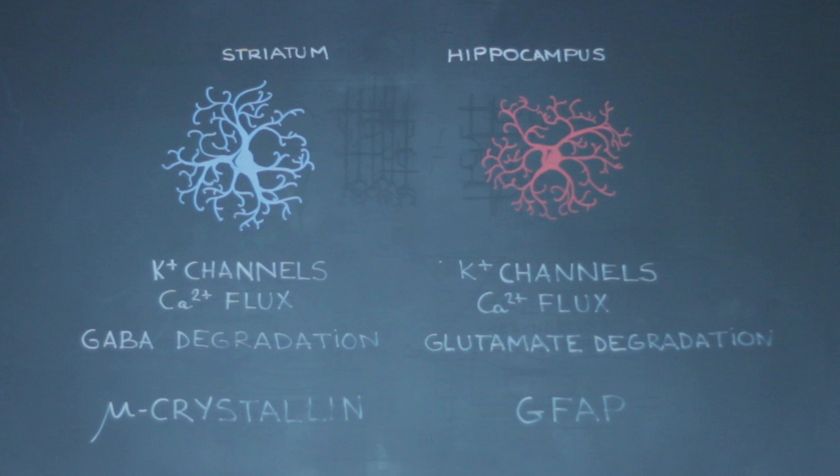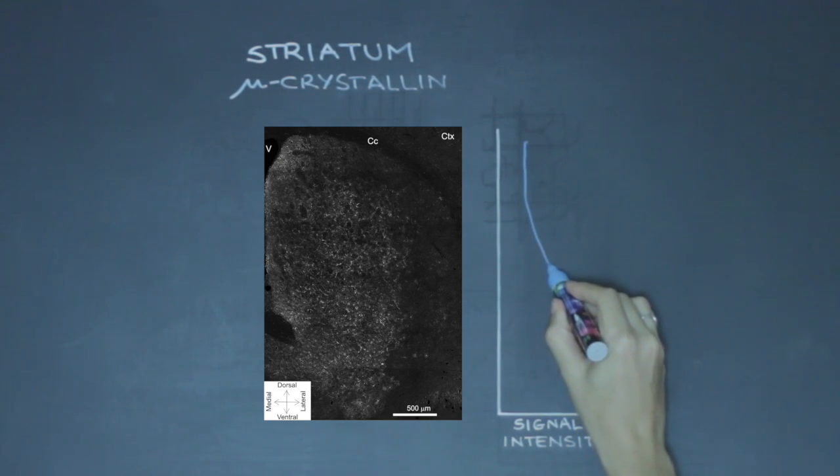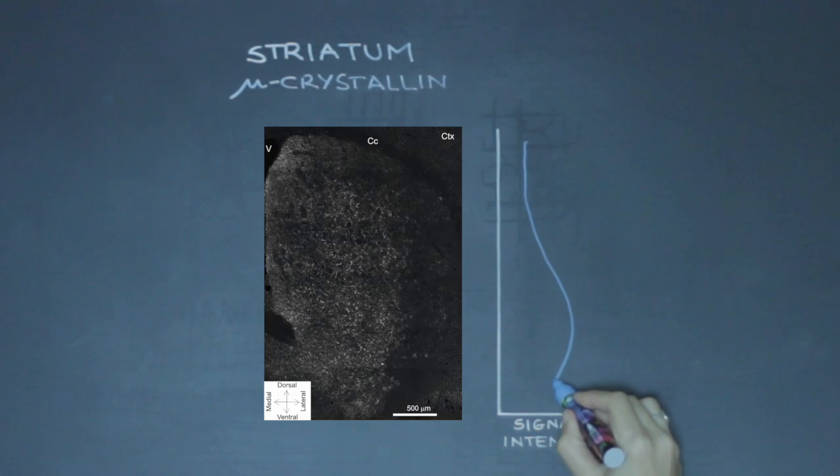We also found that the classic astrocyte marker GFAP was hippocampal enriched. Interestingly, mu-crystalline displayed a gradient of expression that increased towards the ventromedial region of the striatum. In summary, we collected functional, morphological, and molecular data that indicate astrocytes are neural circuit-specialized cells. In addition to the value of the data, we provide a workflow, new tools, and resources to study astrocyte biology and diversity.